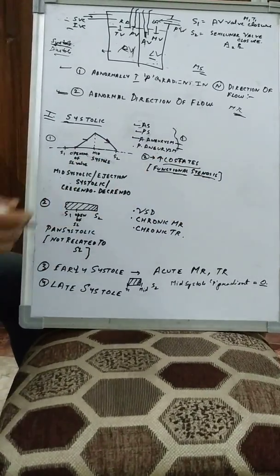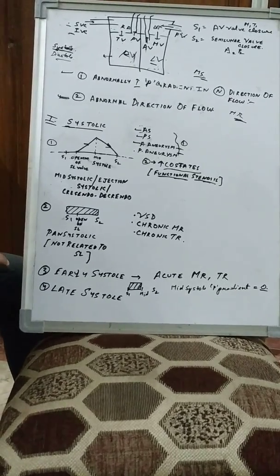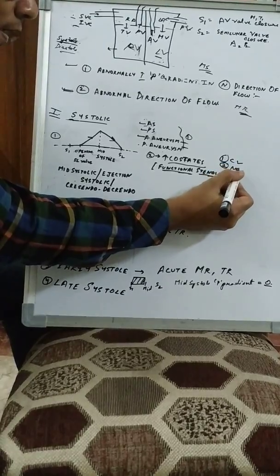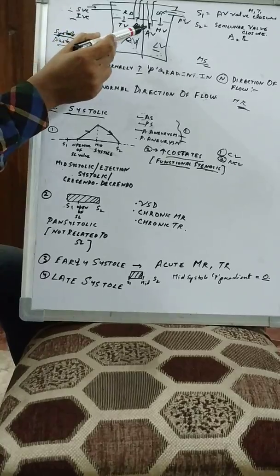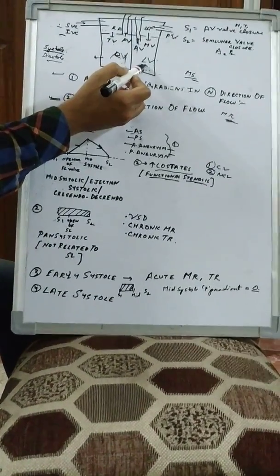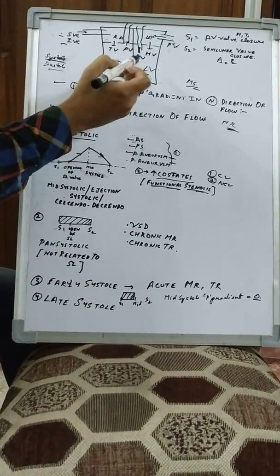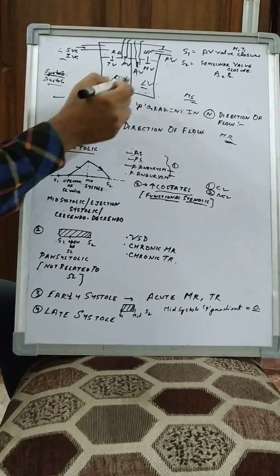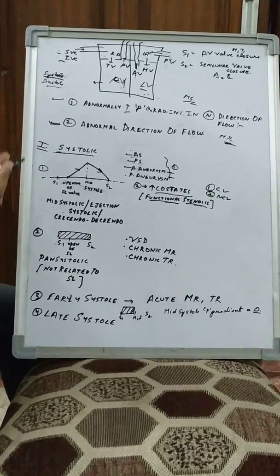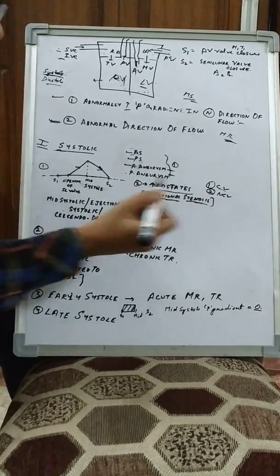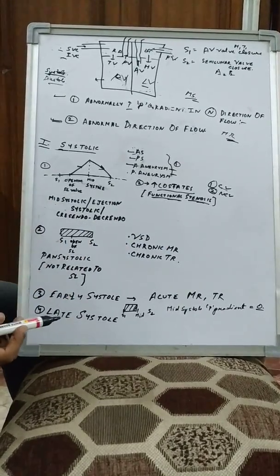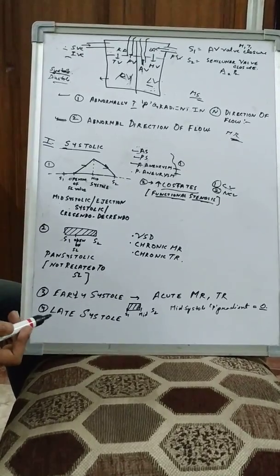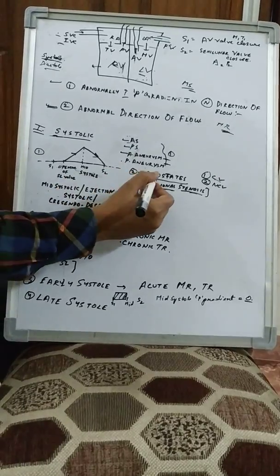High cardiac output states can be divided into cardiovascular and non-cardiovascular causes. Cardiovascular causes include aortic regurgitation — where blood flows back into the left ventricle when the aortic valve fails to close, leading to more blood for the next cycle — as well as mitral regurgitation and patent ductus arteriosus. Non-cardiovascular causes include pregnancy, thyrotoxicosis, beriberi, Paget's disease, and AV fistula. The detailed mechanisms will be covered in a separate video.